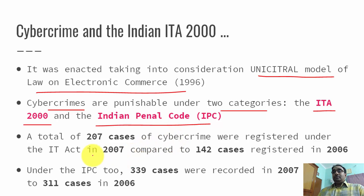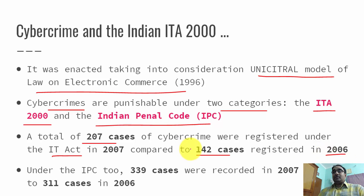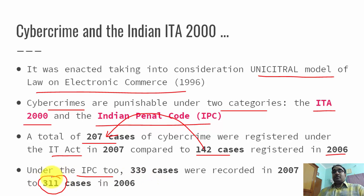Based on the IT Act, 207 cases of cyber crime were registered in 2007, compared to 142 cases registered under ITA in 2006 — you can see the increase from 142 to 207. Under the Indian Penal Code (IPC), the number of cases registered was 311 in 2006, and it was increased to 390 in 2007.